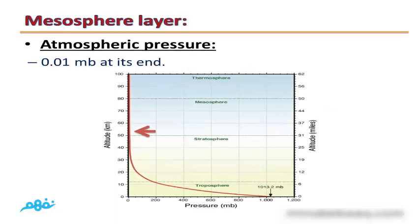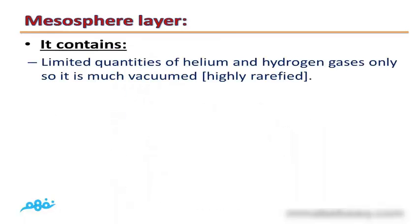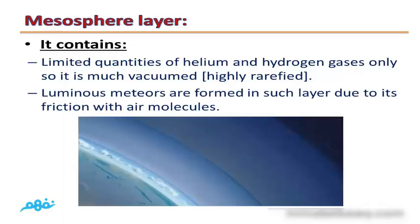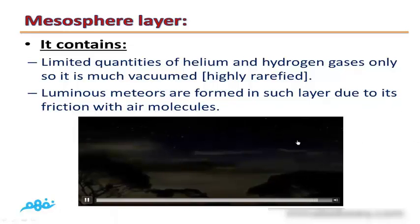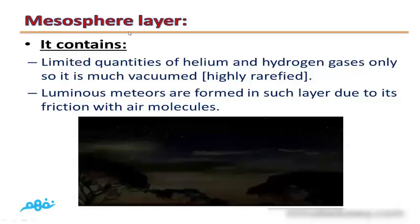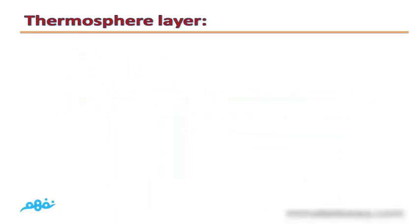Atmospheric pressure decreases with increasing height, until it reaches only 0.01 millibar at the Mesopause. The Mesosphere contains limited quantities of helium and hydrogen gases only, so it is highly rarified and almost empty. Luminous meteors are formed in this layer due to friction with air molecules.